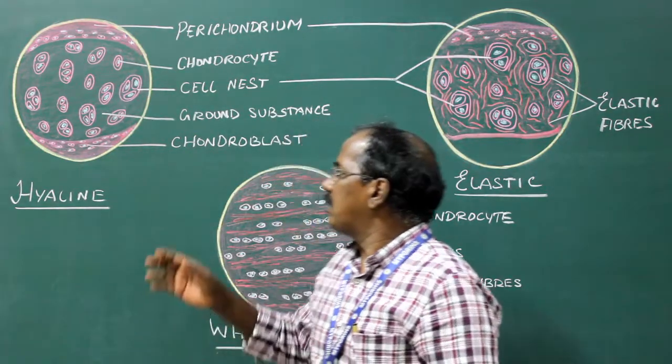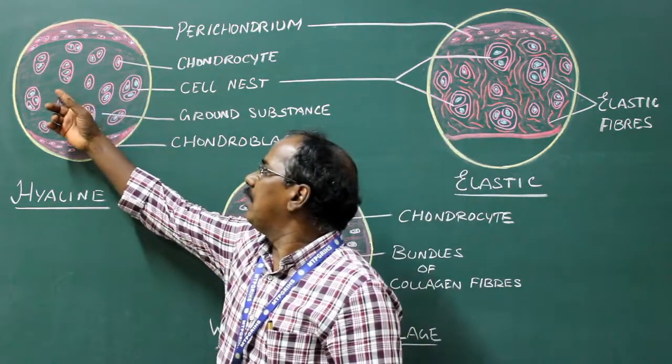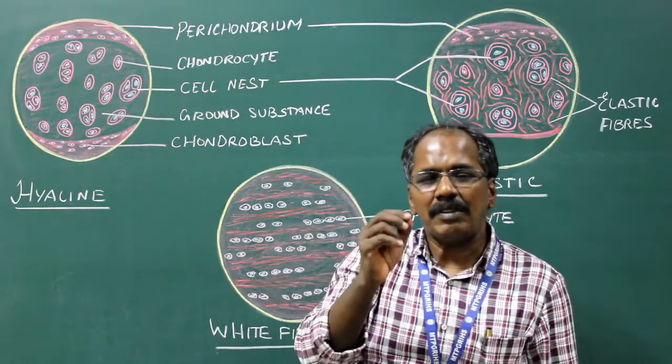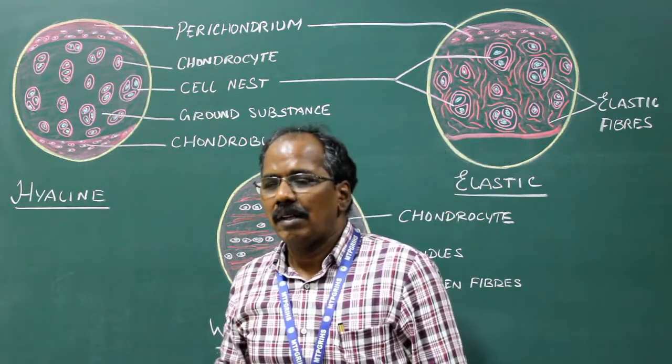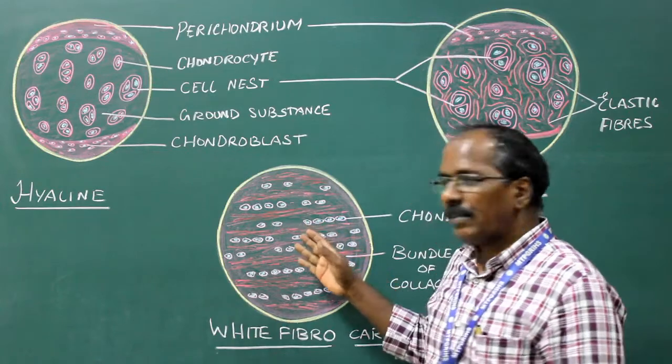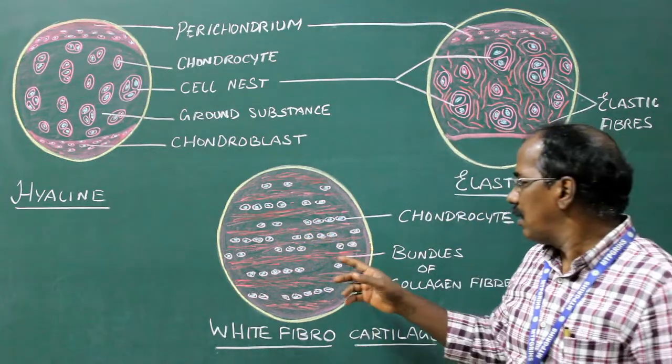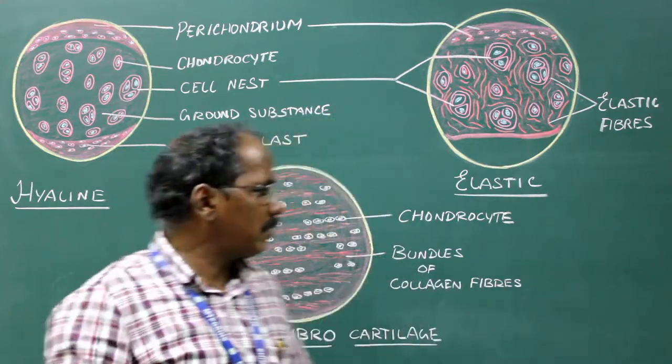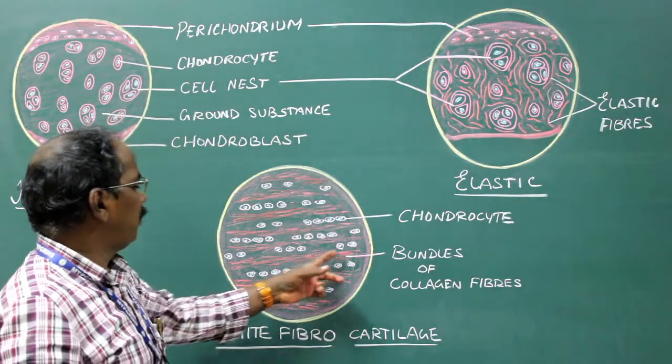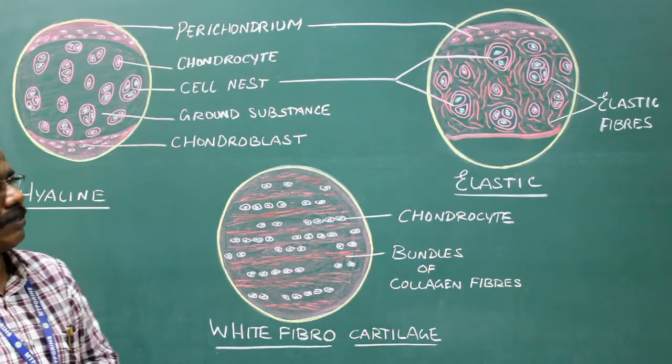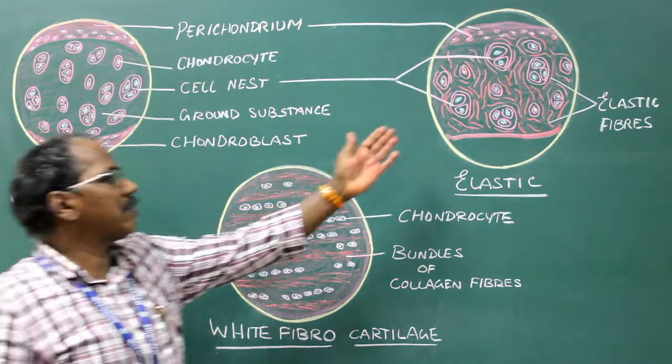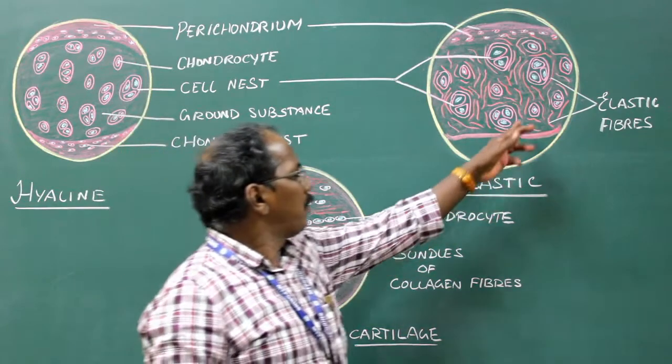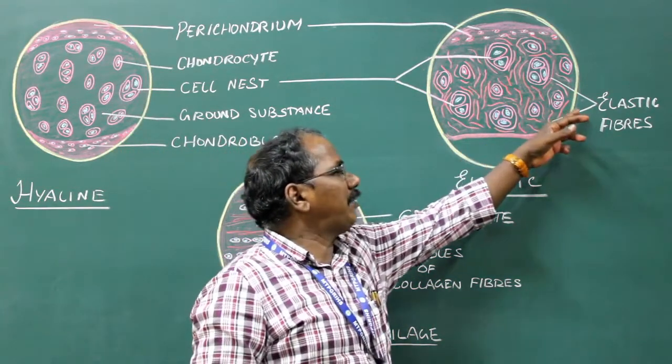The hyaline cartilage has a fine ground substance. That is, the ground substance is fine and smooth. The ground substance of white fibrocartilage has bundles of collagen fibers. The ground substance of elastic cartilage consists of coarse elastic fibers.